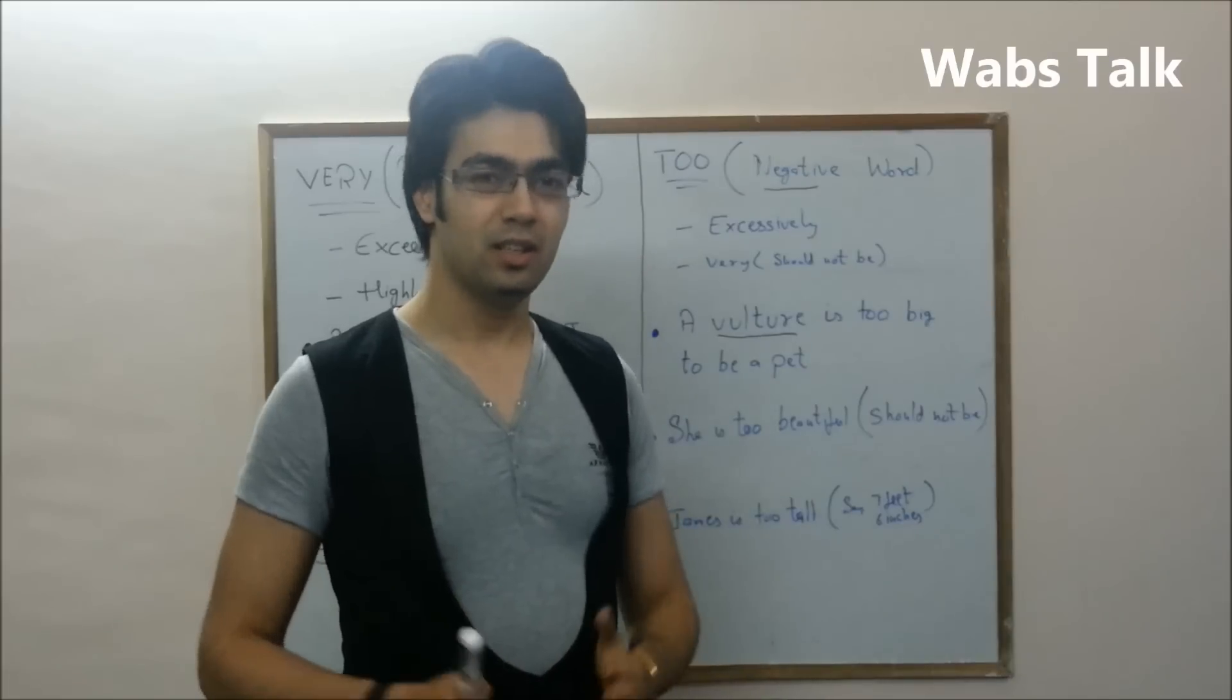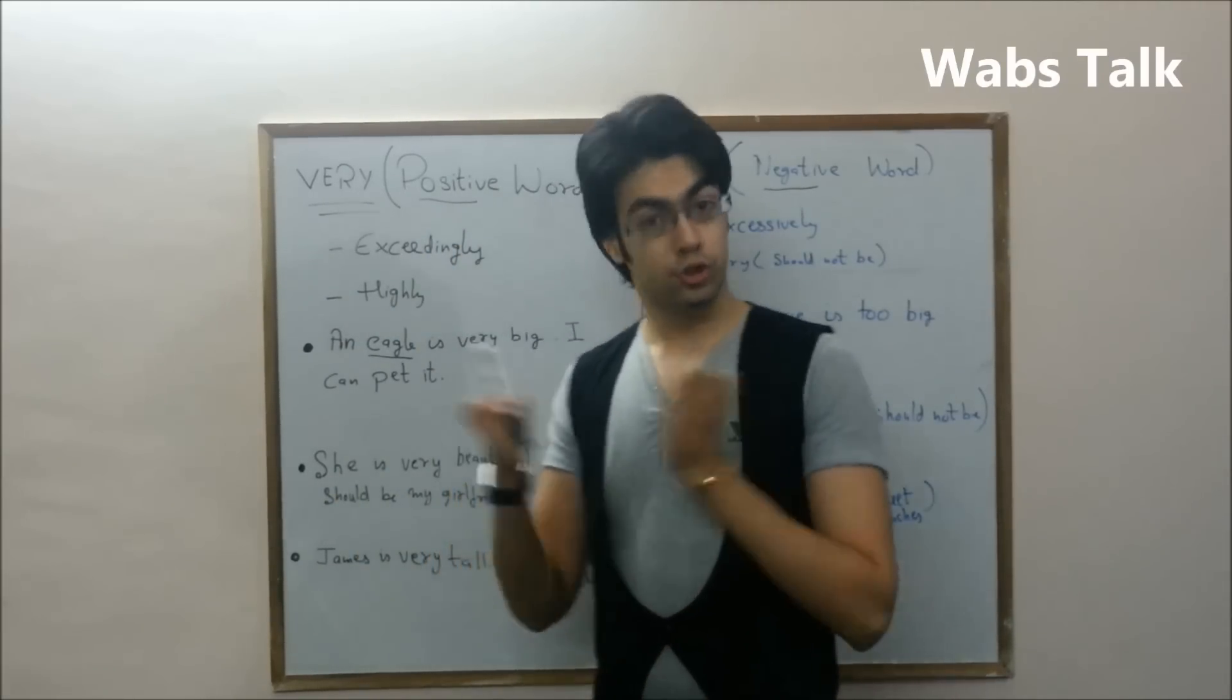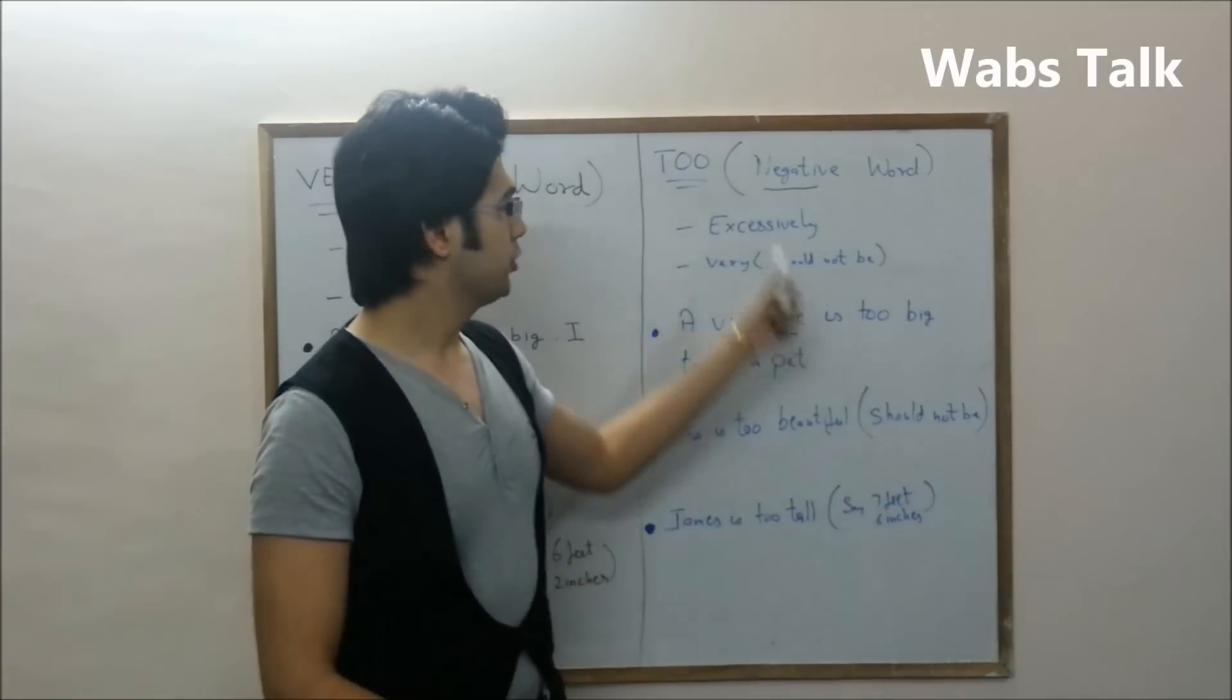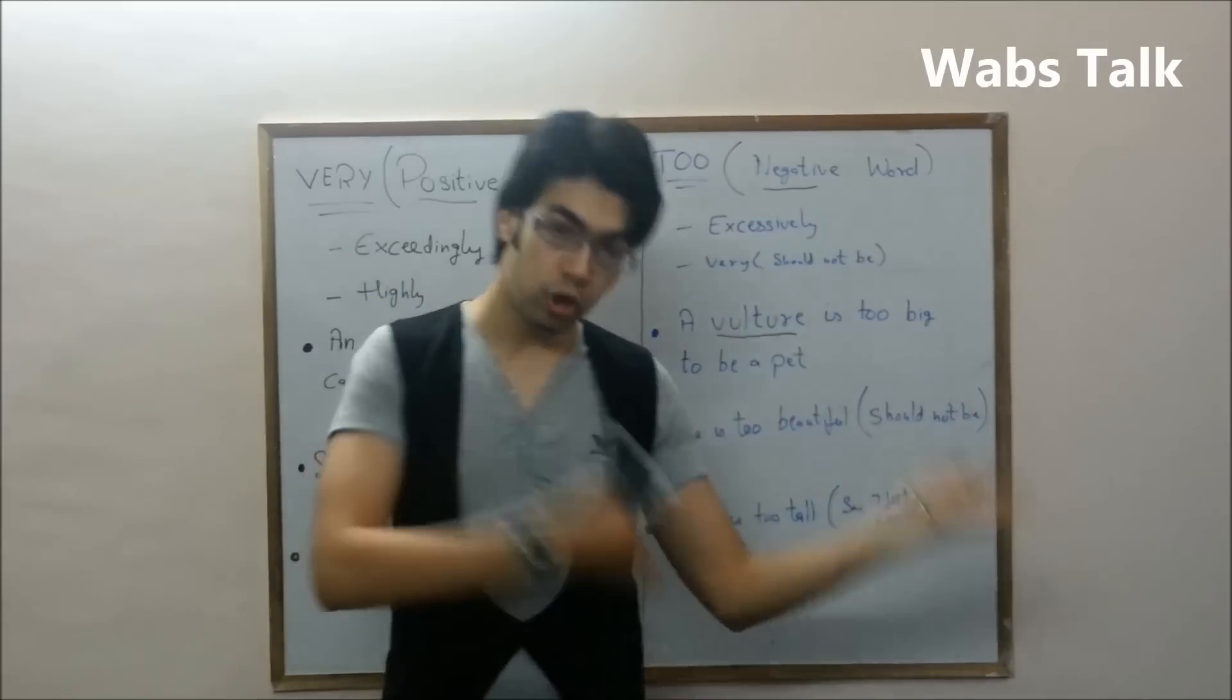So it's quite easy and understandable. Very is a positive word. Very is for something that should be. However, too, although they both mean same, is a negative word. Too is something that should not be.